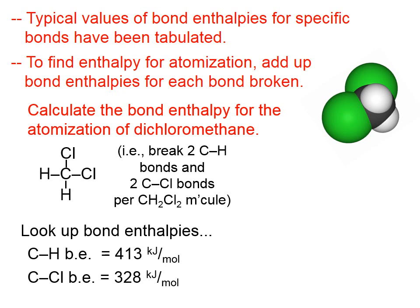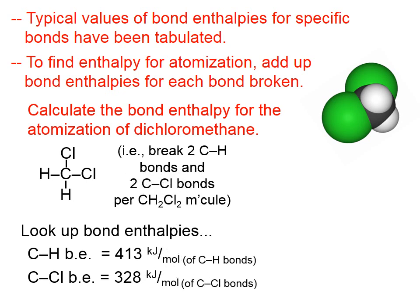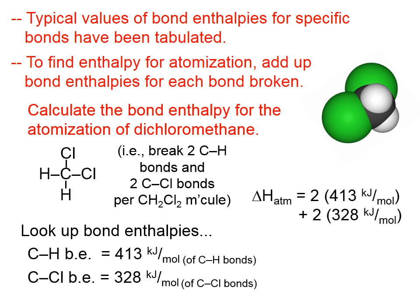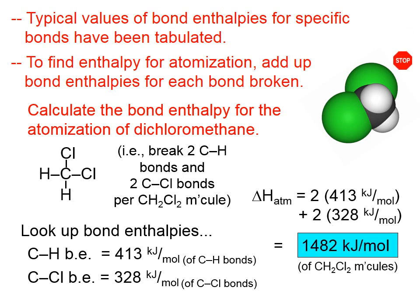We'll look up the bond enthalpies, which are typically reported in units of kilojoules per mole. For carbon-hydrogen bonds, it takes 413 kilojoules for every mole of those bonds — that is, per 6.02 × 10²³ bonds. The bond enthalpy for the atomization of dichloromethane is simply 2 × 413 plus 2 × 328, which adds up to 1,482 kilojoules per mole — that is, per 6.02 × 10²³ dichloromethane molecules.